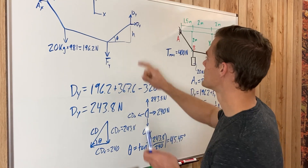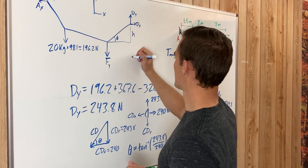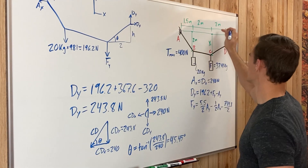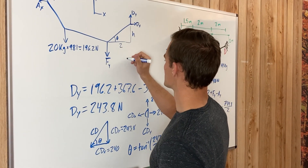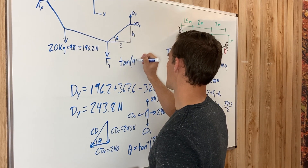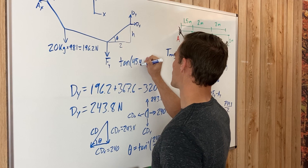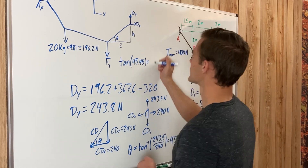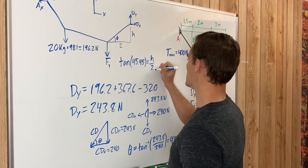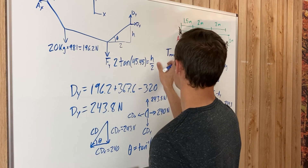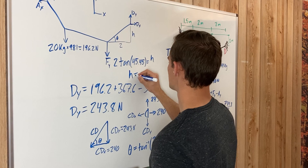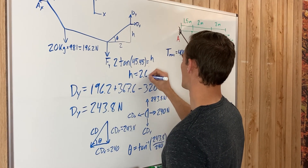To find h, we use the fact that this horizontal length of the triangle is 2 meters (given in the problem). So tan(45.45°) equals h divided by 2. Multiplying both sides by 2 gives h equals 2 times tan(45.45°), which equals 2.03 meters.